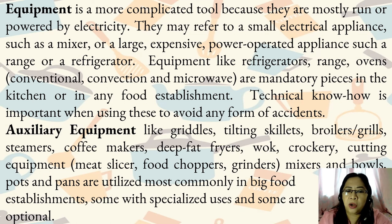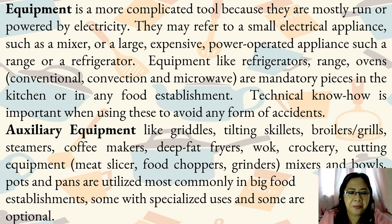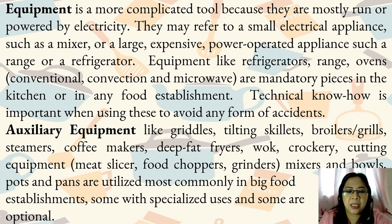Auxiliary equipment such as griddles, tilting skillets, broilers or grills, steamers, coffee makers, deep-fat fryers, woks, crockery, cutting equipment like meat slicers, food choppers and grinders, mixers, and pots and pans are utilized most commonly in big food establishments, some with specialized uses and some are optional.